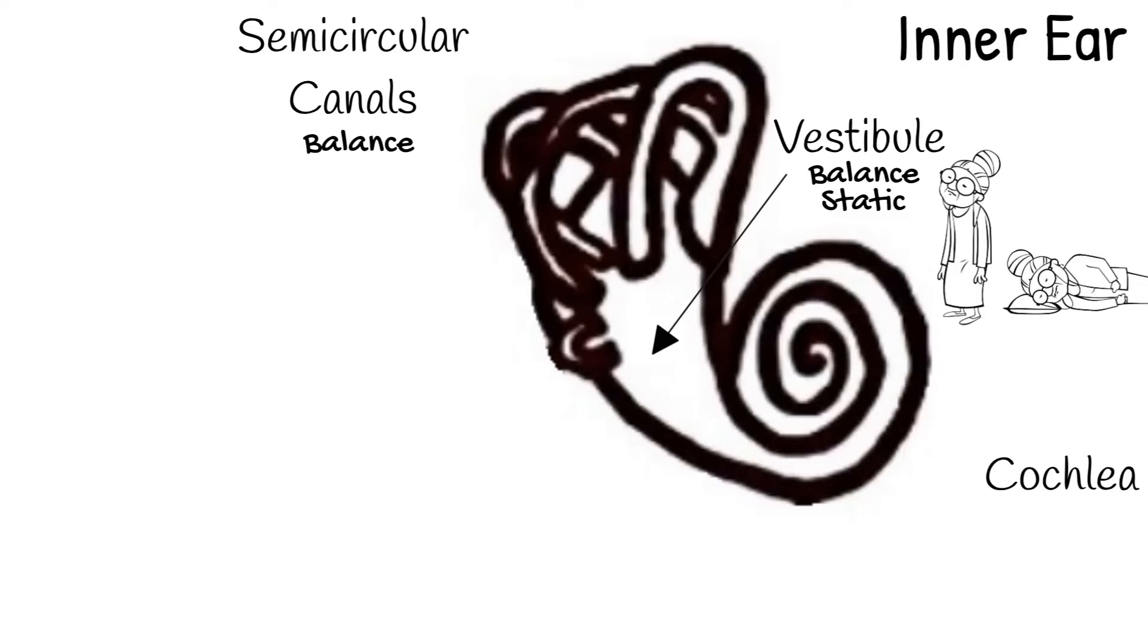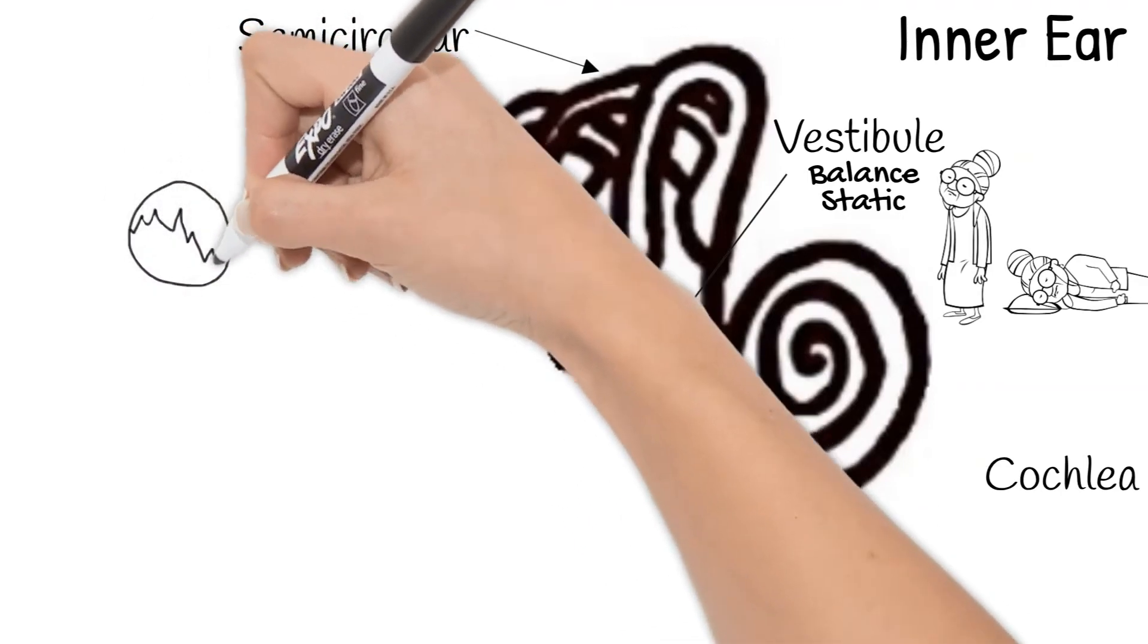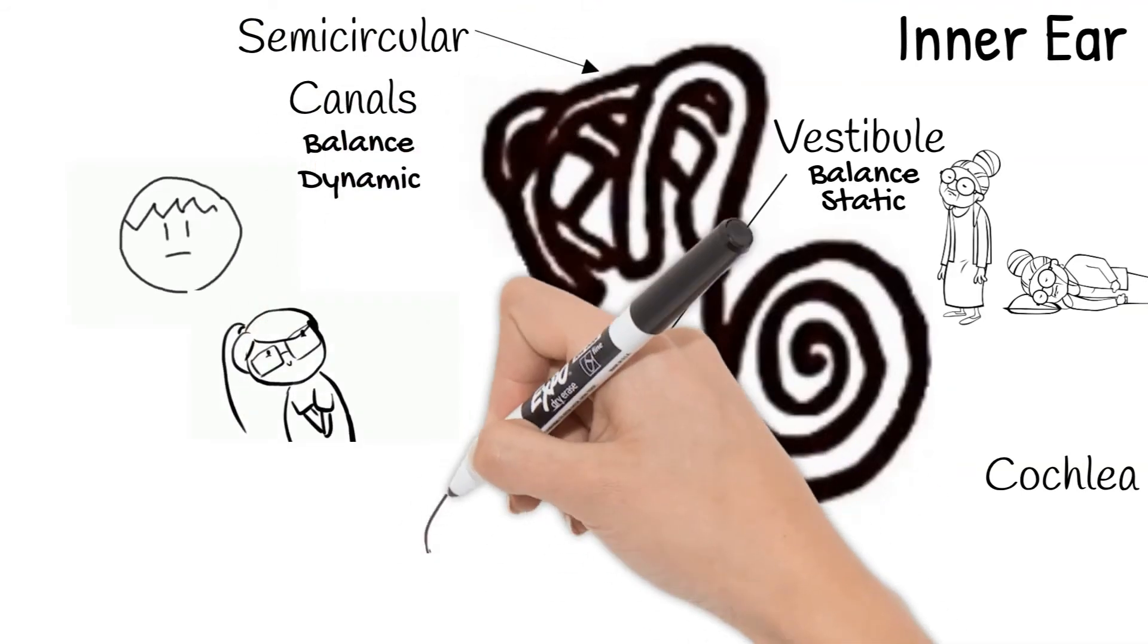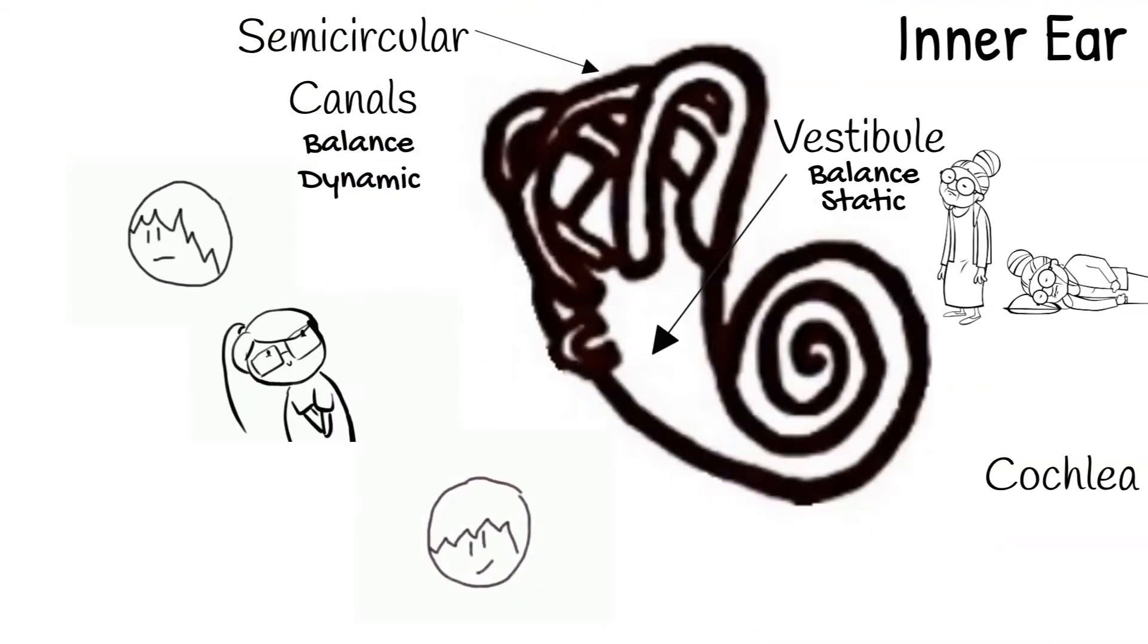The semicircular canals help identify head movement or dynamic equilibrium. Each one is filled with fluid and is going a slightly different way. As you move your head the fluid inside moves and sends signals to your brain. Depending which semicircular canal sends the signal tells your brain if your head is moving side to side, tilting, or up and down.